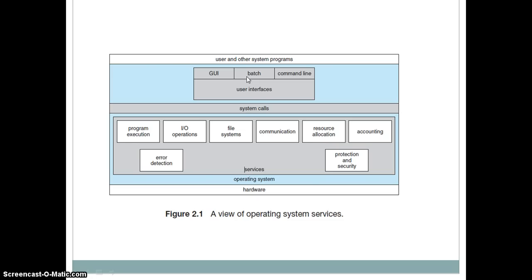Down below the interface abstraction layer we have system calls — we'll talk about those later. Below the system calls we have operating system services: those services provided by the operating system to application programs in order to complete their execution. These services include program execution, input/output operations, file systems, communication, resource allocation, accounting, error detection, protection, and security.